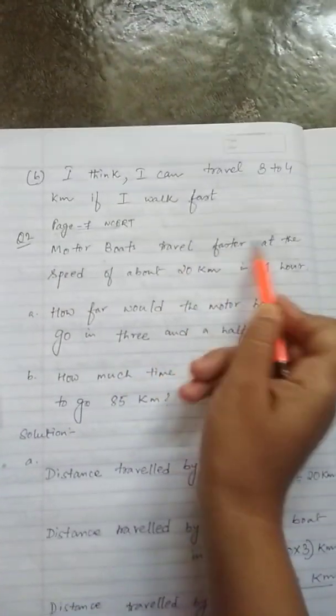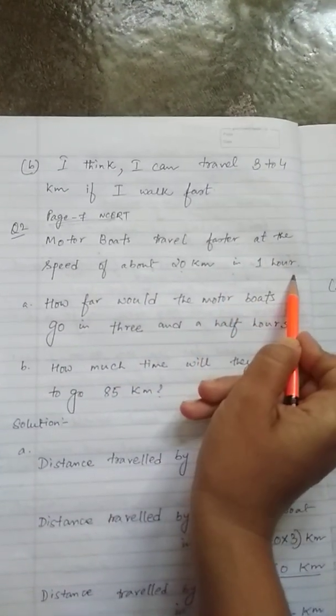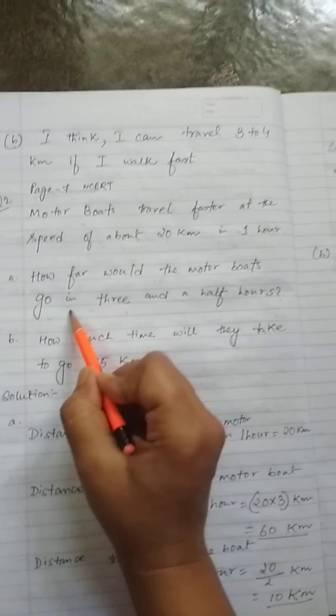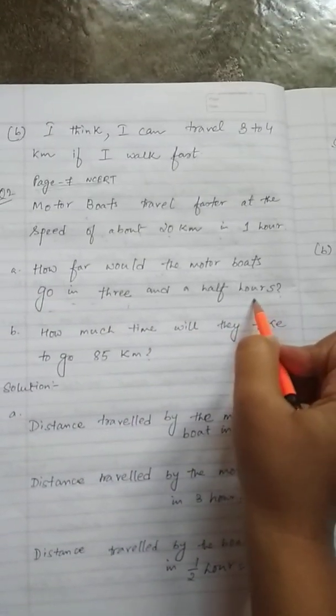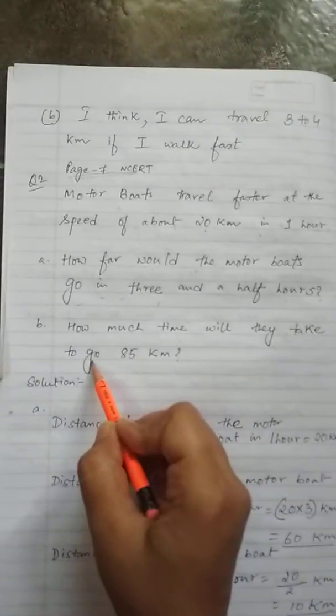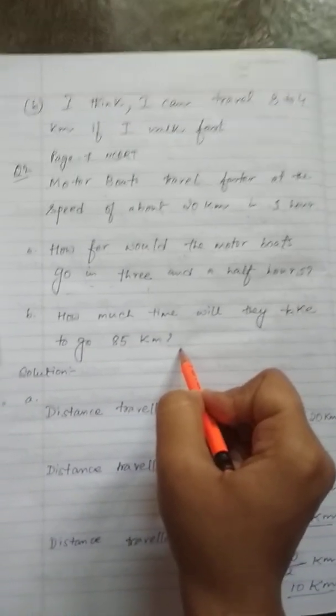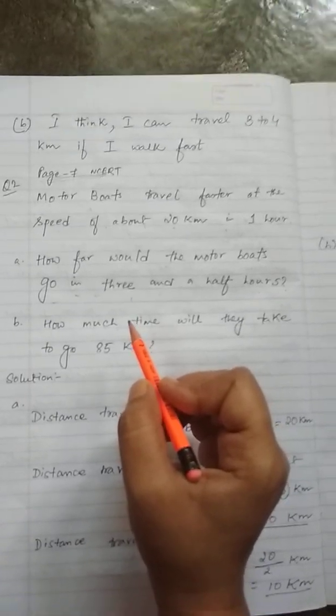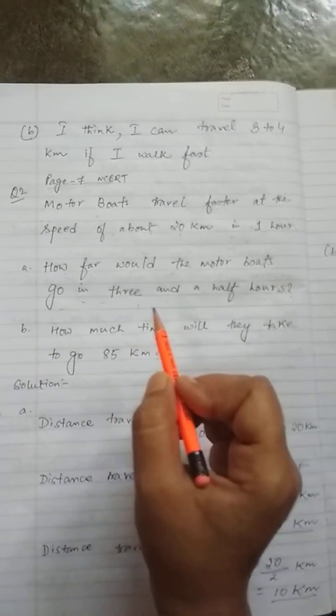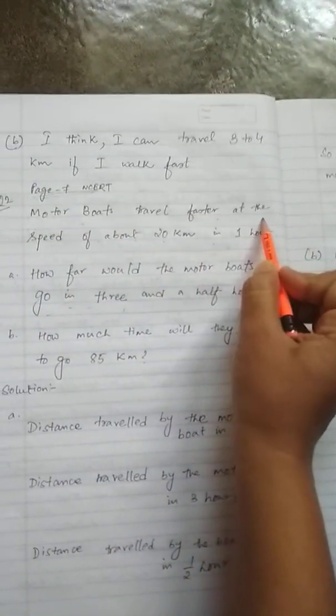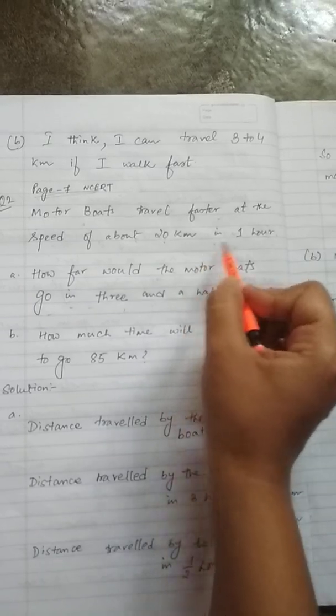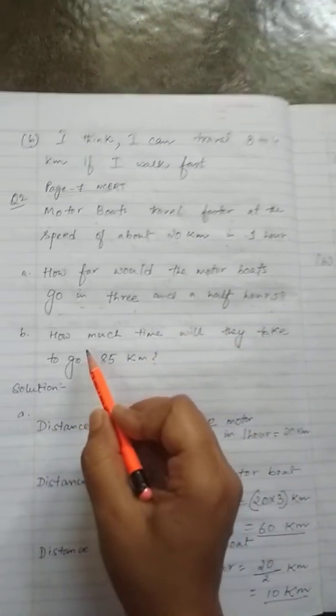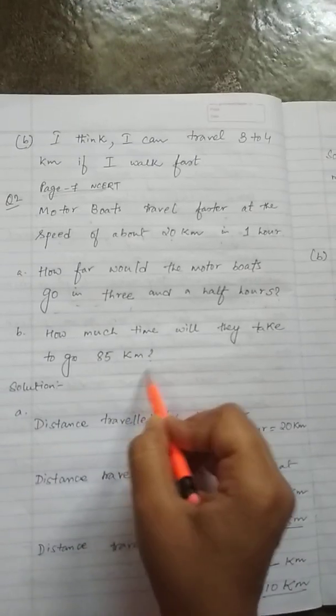So let's take the question. Motorboats travel faster at the speed of about 20 km in one hour. The question is how far would the motorboats go in three and a half hours? Similarly, how much time will they take to go 85 km? Now when the question is a little bit lengthy, I always tell students to read the question minimum two times so that it is very easy to understand what is being given.